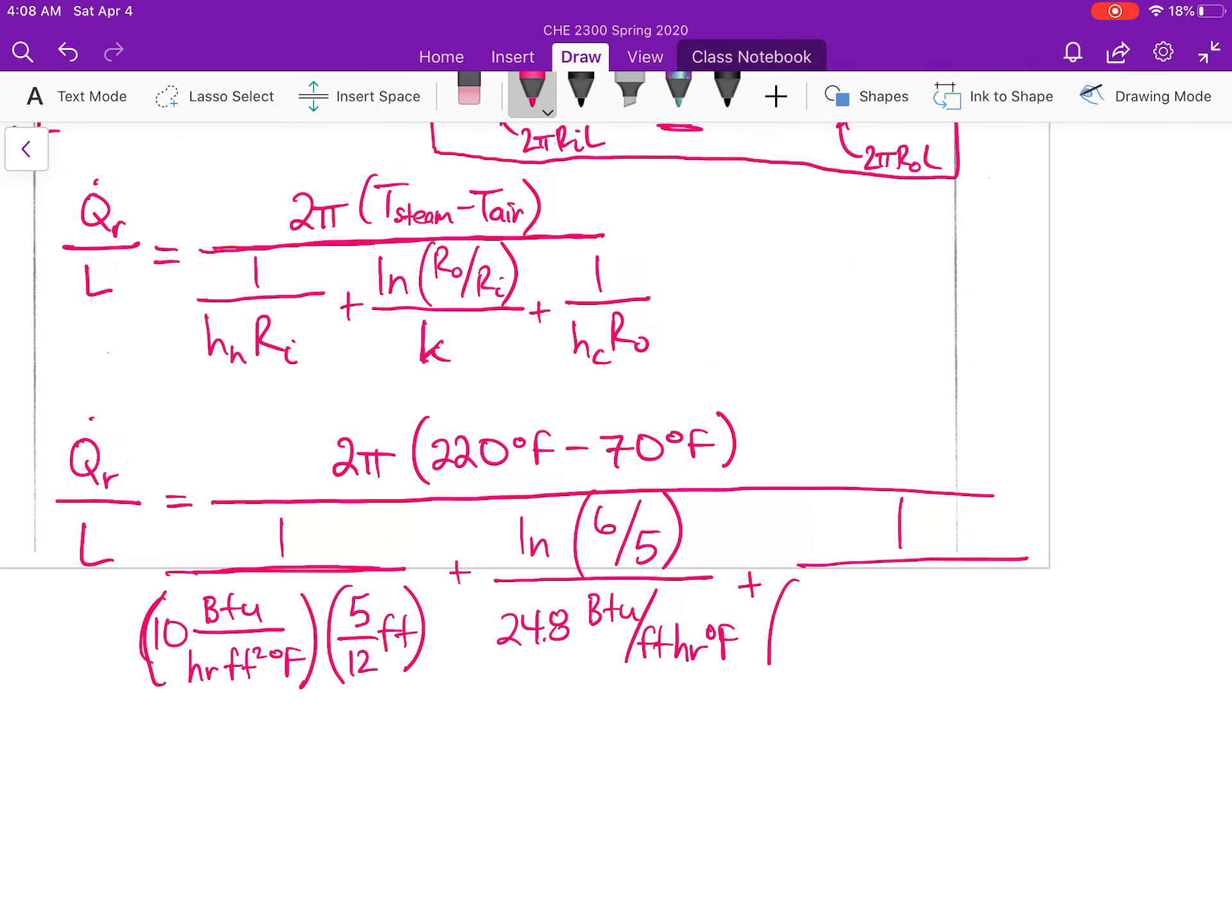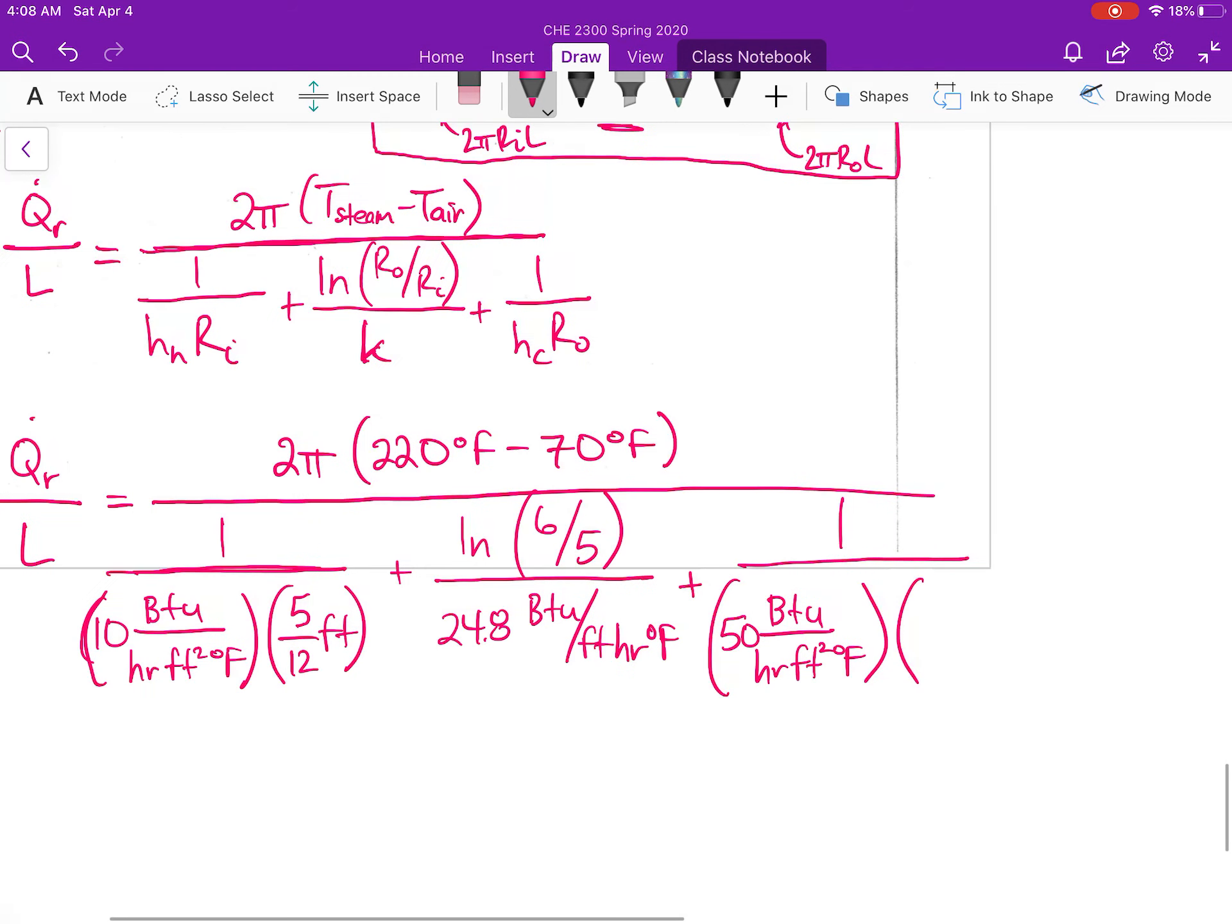Plus 1 over the convective heat transfer coefficient on the outside of the pipe, 50 BTUs per hour foot squared degrees Fahrenheit, multiplied by the outside radius of the pipe, 6 divided by 12.